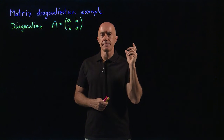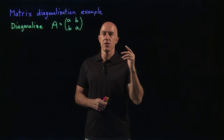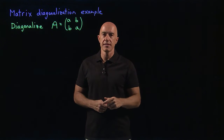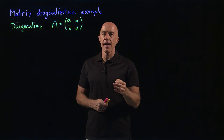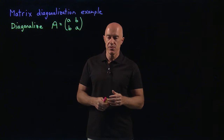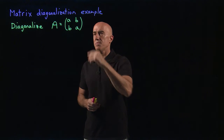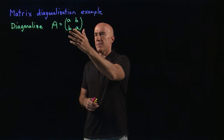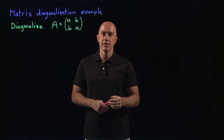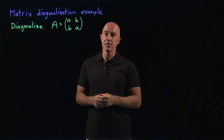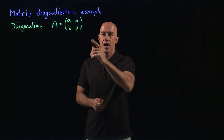In this video, we should do a concrete example so you can actually see how to diagonalize a specific matrix. We consider a simple two by two matrix, ABBA. You can see that this is a symmetric matrix, which is nice because it means it will have real eigenvalues.